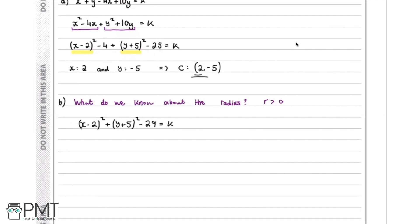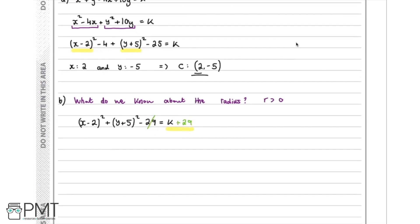So what we can do now is add 29 to both sides. And we now have this equation, which is the equation of our circle. So we know that the radius can now be read off this part of our circle and we know that that must be greater than zero.